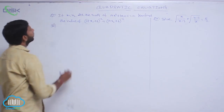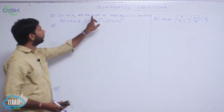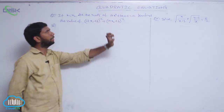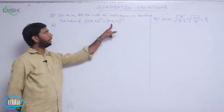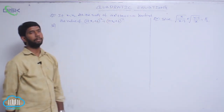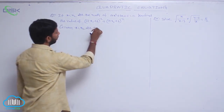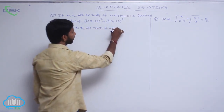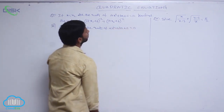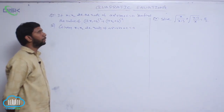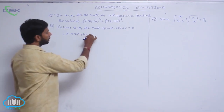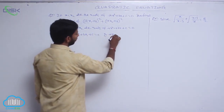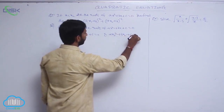If x₁, x₂ are the roots of the equation ax² + bx + c = 0, then find the value of (ax₁ + b)⁻² + (ax₂ + b)⁻². Given x₁, x₂ are the roots of ax² + bx + c = 0, that is ax₁² + bx₁ + c = 0 and ax₂² + bx₂ + c = 0.